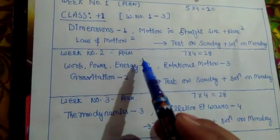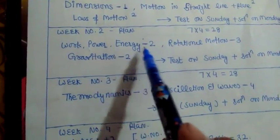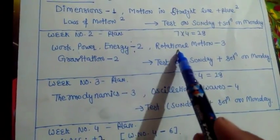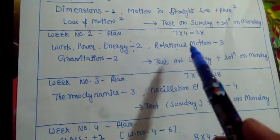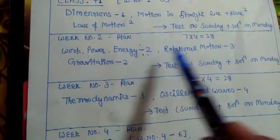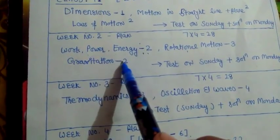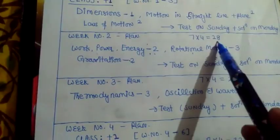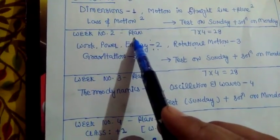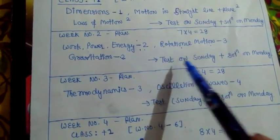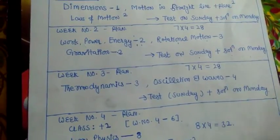In the second week, what will be the study plan? In the second week, we will discuss Work, Power, and Energy — two questions come from here every year. From Rotational Motion, which is a tricky lesson, there are three questions. And from Gravitation, which is an easy lesson, there are two questions. So two from Work Power Energy, three from Rotational Motion, and two from Gravitation — seven into four means 28 marks we will get in the second week. I will upload the test series on Sunday and the solution on Monday.